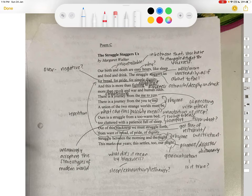There is a journey from the you to me. A union of the two strange worlds must be. Ours is a struggle from a too warm bed, too cluttered with a patience full of sleep. Out of this blackness we must struggle forth from want of bread, of pride, of dignity. Struggle between the morning and the night, this marks our years, this settles to our plight.